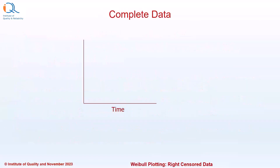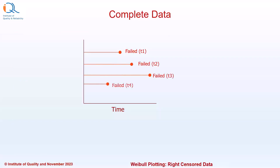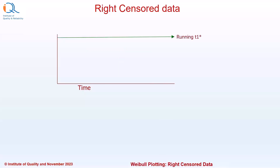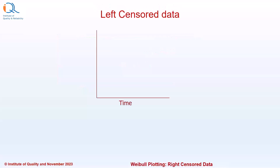Let us look at the types of data. If the exact time to failure of each component is known, we can call it complete data. When we know the time at which the component is running and has not failed, we can call it Right Censored Data. The three components shown here have not failed and are still running at times T1, T2, and T3, so these are all Right Censored Data.